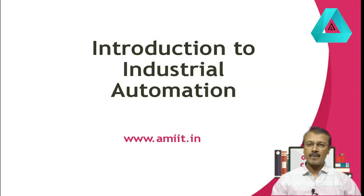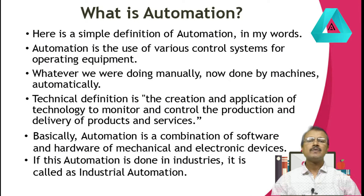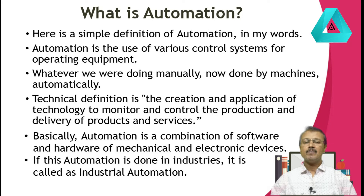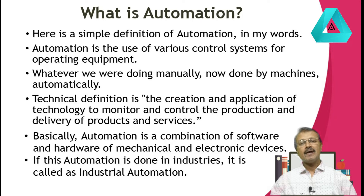So let's start our today's session on Industrial Automation. Introduction to Industrial Automation. From the beginning of manufacturing, factory owners have searched for ways to increase their production rate and lower the cost of product manufacturing. So what is Automation? In simple words, Automation is the automatically controlled operation of any machine by mechanical, electrical or electronic devices that take the place of human labor. The technical definition is the creation and application of technology to monitor and control the production and delivery of products and services.